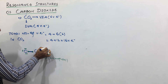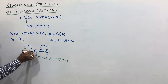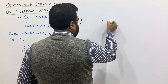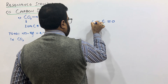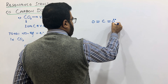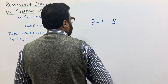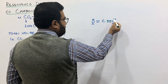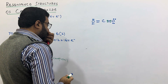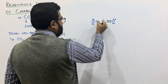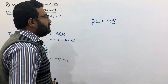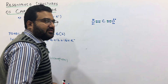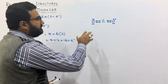In order to complete the octet of carbon, this oxygen shares its lone pair and this oxygen also shares its lone pair of electrons with carbon. The resulting structure will be C double bond O and double bond O. Both oxygens will now have two lone pairs and two bond pairs. Counting: one, two, three, four, five, six, seven, eight — the octet of both oxygens is complete. Carbon also has eight electrons in the form of four bond pairs, so the octet of all atoms is completed.